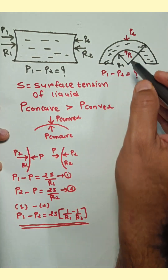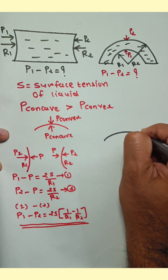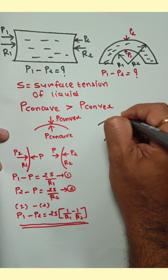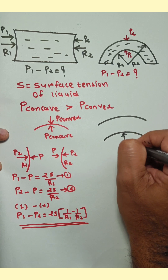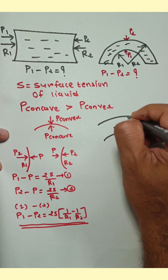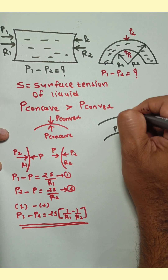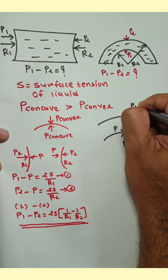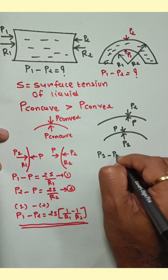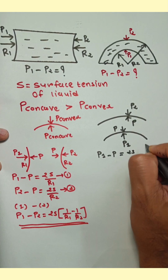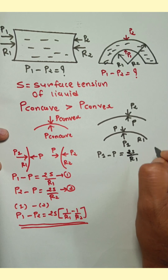Now see the second diagram. In the second diagram there are two curved surfaces. Pressure on the concave side is P1 and on the convex side is P. Similarly, on the other surface the pressure on the concave side is P2. So for the first surface: P1 minus P equals 2S upon R1.